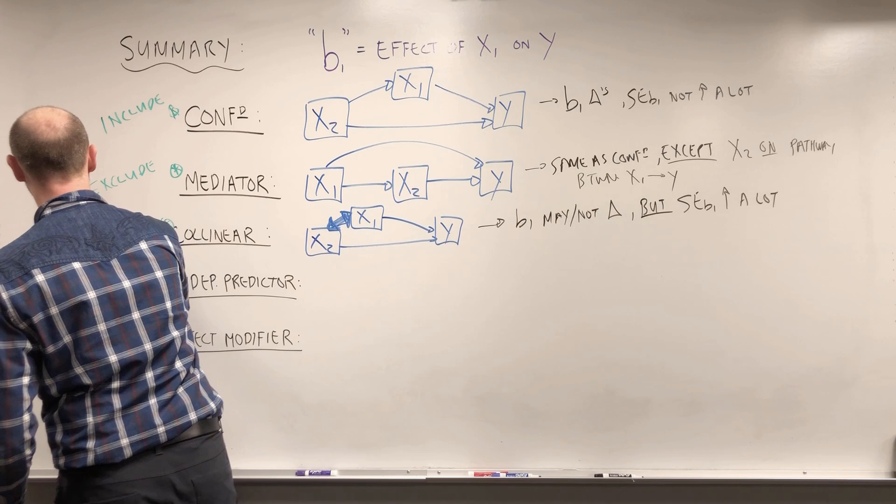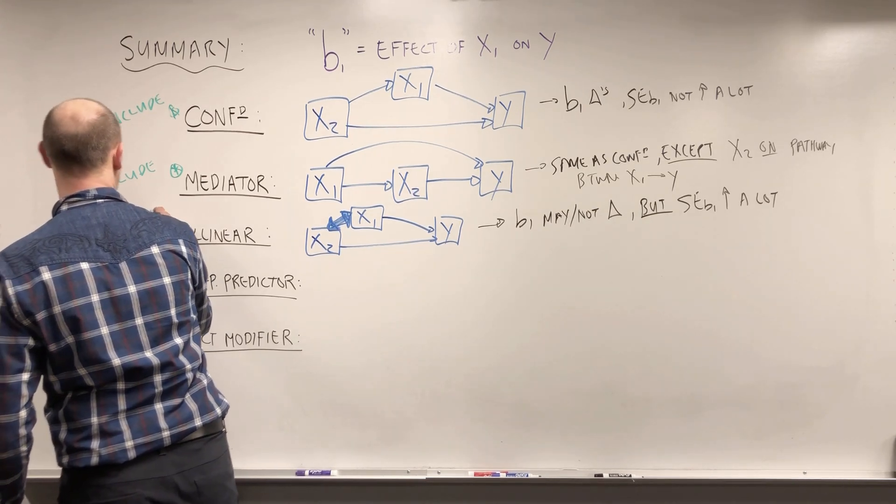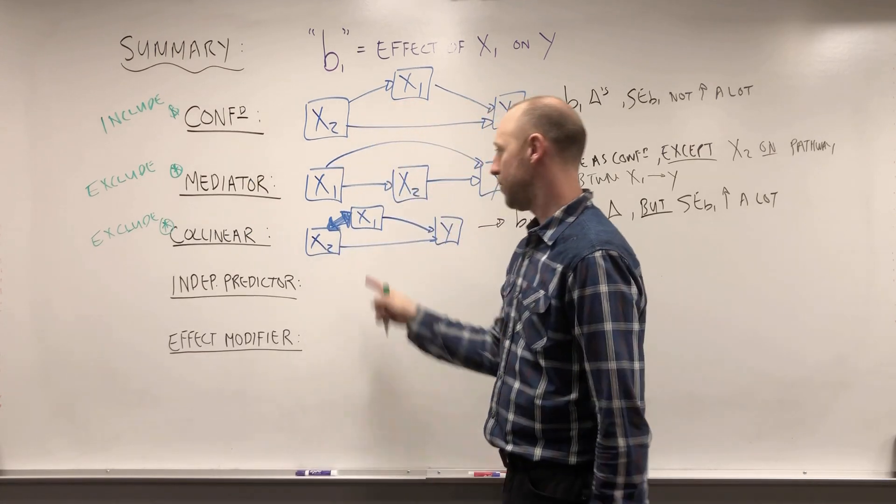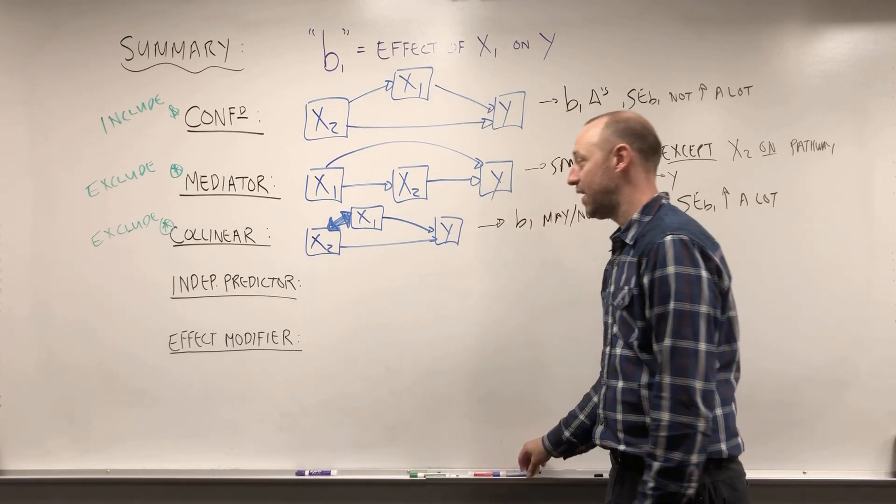If we have a collinear variable, we want to exclude this. So if some variable essentially is an alternate measure of our variable of interest, we want to make sure we don't put that in the model.